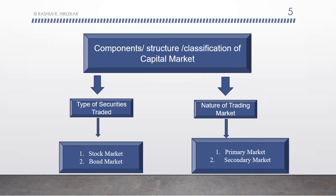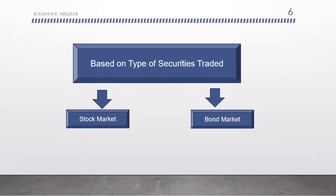We will discuss in detail about types of securities traded and nature of trading. Based on types of securities traded, capital market is divided into two parts: stock market and bond market.